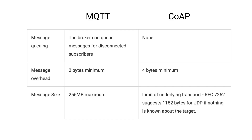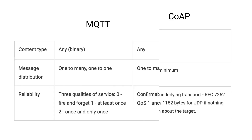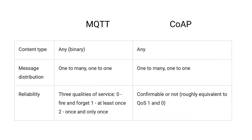MQTT has a minimum message overhead of 2 bytes, while CoAP has a minimum message overhead of 4 bytes. The maximum message size in MQTT is 256 MB; in CoAP, the limit of the underlying transport is 1152 bytes. Both MQTT and CoAP can ingest any content type, and message distribution in both can be one-to-many or one-to-one.